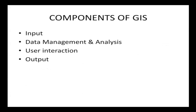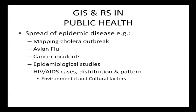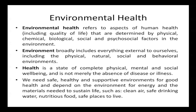GIS components include data management and analysis, user interaction, and output. GIS and remote sensing are extremely useful in public health and environmental health because we can identify patterns and study the spread of epidemic diseases — like mapping cholera outbreaks, avian flu, cancer incidence, malaria-prone areas, epidemiological studies, HIV/AIDS cases, distribution and patterns of various health problems, and environmental control factors associated with environmental health.